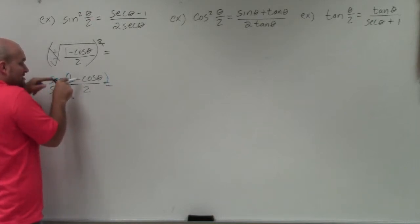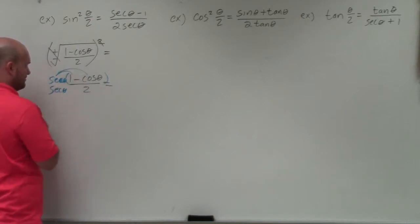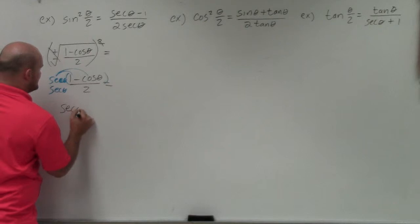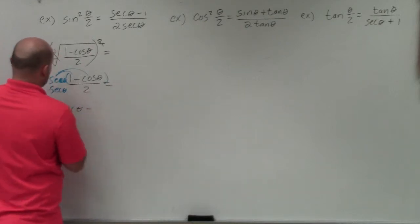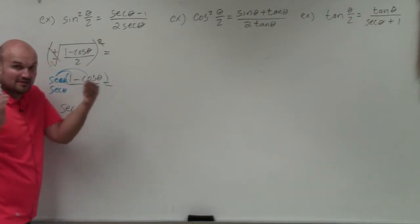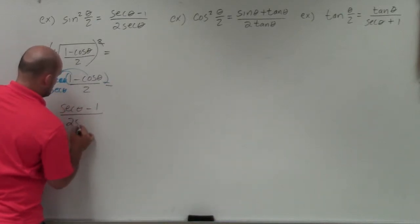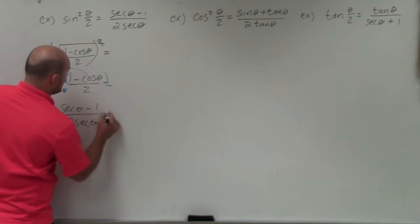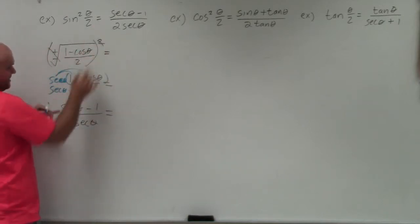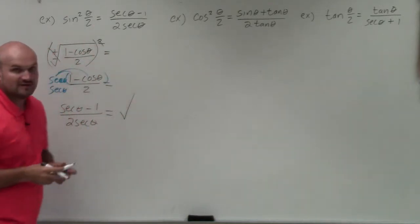Make sure the numerator is a binomial. So you have to apply the distributive property. When I do that, I get secant of theta minus secant of theta times cosine of theta. Those are reciprocal functions of each other. So that's going to equal 1 over 2 secant of theta. You can see that now I have verified my function.